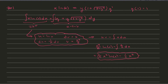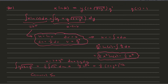For the u-substitution on the y-side, we have y times the square root of 3 plus y² dy. Setting u equal to 3 plus y², we get du equal to 2y dy. The integral becomes (1/2) times the integral of √u du, which integrates to u^(3/2) times 2/3. Our answer is (1/3) times (3 + y²)^(3/2).